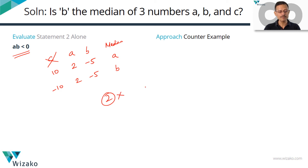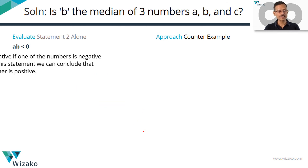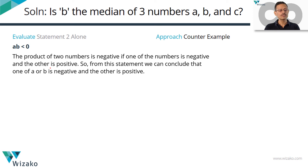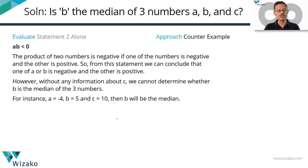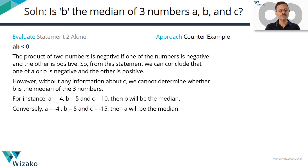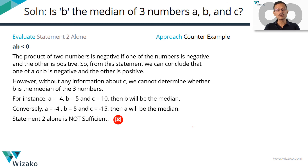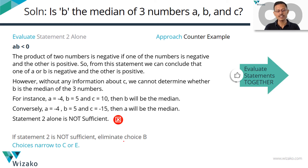At the end of statement 1 we narrowed down to B, C, or E. Statement 2 alone is also not sufficient — we do not know which value C takes. We know one of A or B is positive and the other is negative, but without knowing anything about C we cannot determine whether B is the median. Eliminate B. We are down to C or E.